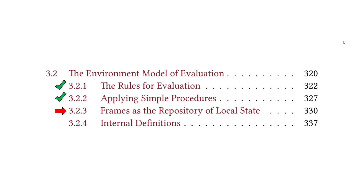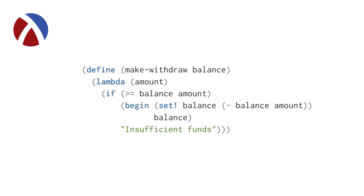This takes us to the third subsection: frames as the repository of local state. The text shows another example we've seen before — the make-withdraw procedure, used to store a certain balance. We have an amount that can be passed to this procedure in order to adjust the balance — essentially to take out funds.